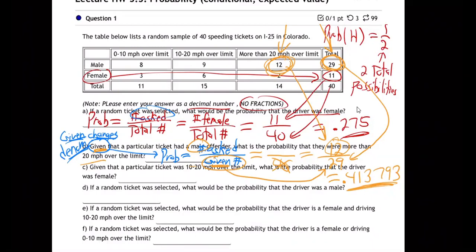Other questions on that one? C is going to be kind of the same — it's another given. Let's take a look. Part C: given that a particular ticket was 10 to 20 over the limit, what's the probability it was a female?